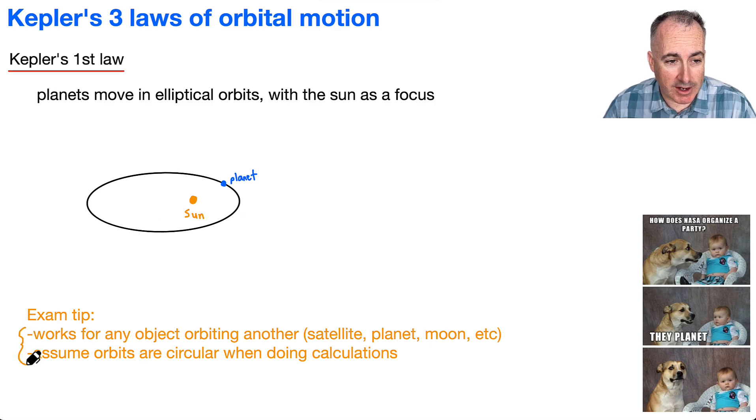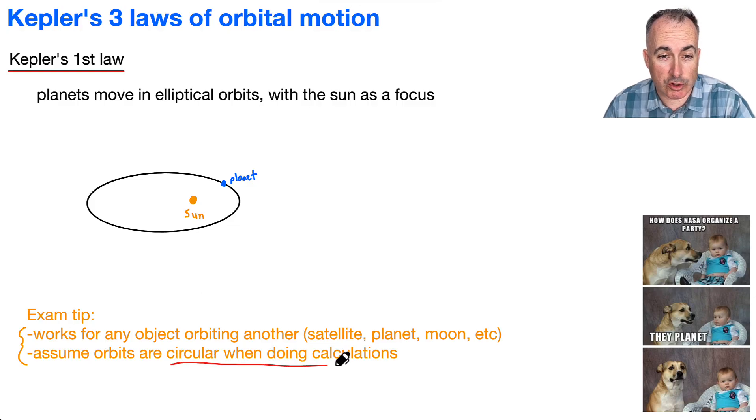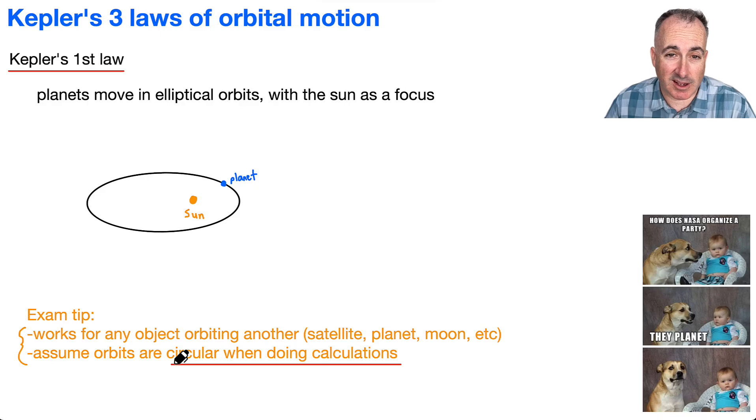The key is that it works for any object orbiting any other objects. It could be satellite, planet, moon, whatever. However, as far as on exams for us, if we're doing calculations, we're going to assume circular orbits. That's going to be really important and really nice for us. Turns out the math isn't actually that bad for using ellipses, but in IB physics we don't have to worry about it.